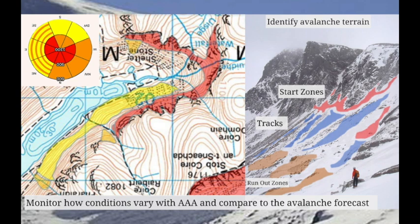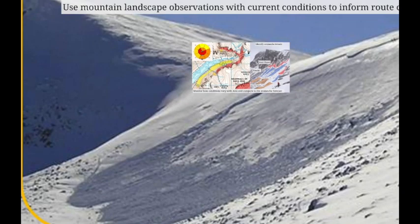On the left-hand side of this picture, we see the original map and the compass rose from the avalanche forecast. We need to bear that in mind and compare it to the landscape, particularly aspect, altitude and angles, and identify how they match to create avalanche hazard. Also, with good visibility, we'll potentially be able to identify the start zones, tracks, and run-out zones of any avalanche hazard and therefore adapt our route to take that into account.